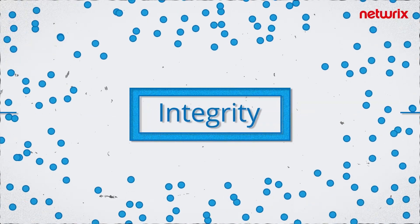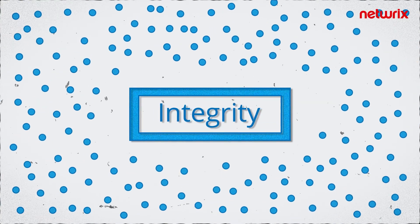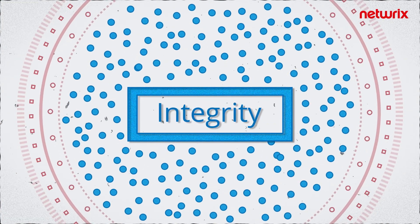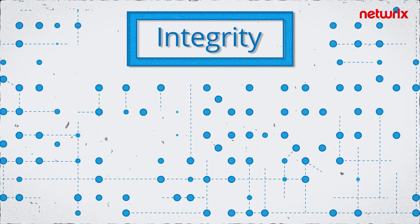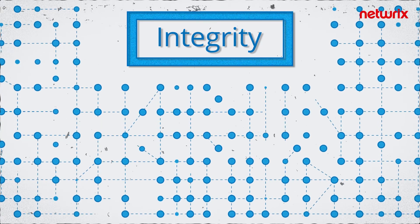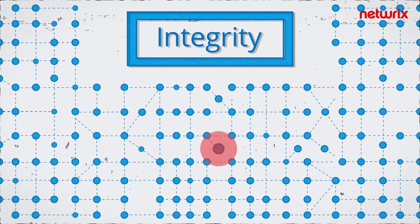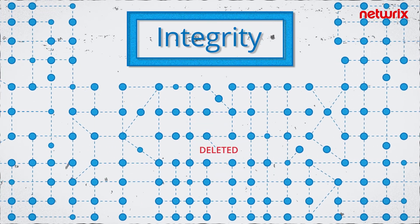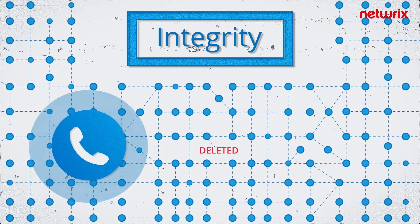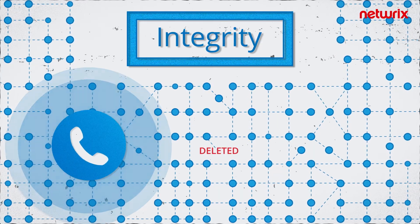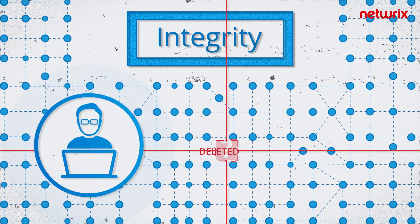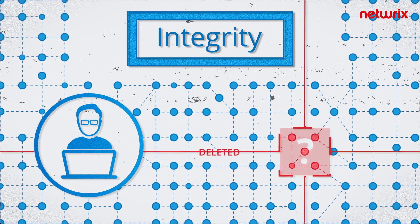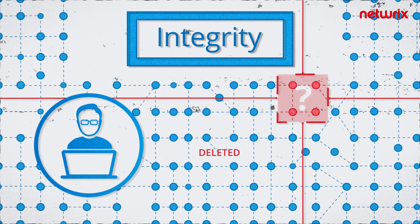Integrity is about protecting data from improper deletions or modifications. For example, if an IT admin accidentally deletes a customer account from the main database, the next time that customer calls in for support, engineers won't be able to locate the information they need to resolve the problem.